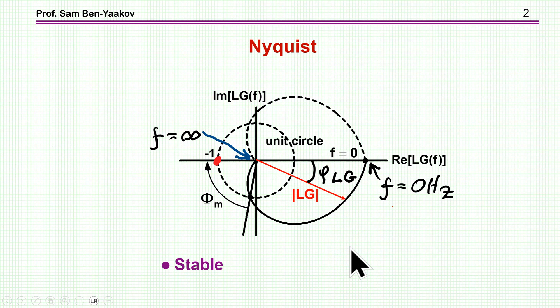What Nyquist criteria says is that if the plot of our system, starting from the frequency of zero to infinity and then from minus infinity to zero again, negative frequencies, if this plot is not encircling the minus one point, this is the unit circle and this is the minus one point, if it's not encircling it, then the system is stable.